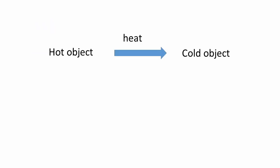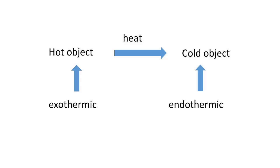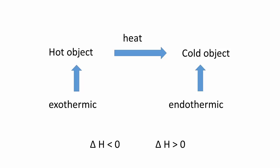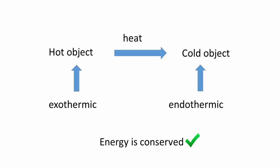Remember that the energy of the universe is a constant. So if a heat transfer occurs between two objects, one must be undergoing an exothermic process and the other is undergoing an endothermic process. Each one's value for the heat must be the exact same magnitude, but of opposite sign. As such, the sum is zero and the energy of the universe is conserved.